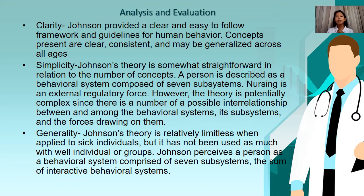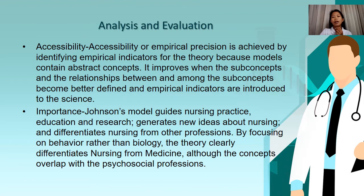Generality: Johnson's theory is relatively broad when applied to sick individuals, but it has not been used as much with well individuals or groups. Johnson perceives a person as a behavioral system comprised of seven subsystems — the sum of interactive behavioral systems. Accessibility: empirical precision is achieved by identifying empirical indicators for the theory; it improves when subconcepts and their relationships become better defined through empirical indicators. Importance: Johnson's model guides nursing practice, education, and research, generates new ideas about nursing, and differentiates nursing from other professions. By focusing on behavior rather than biology, the theory clearly differentiates nursing from medicine, although concepts overlap with the psychosocial professions.